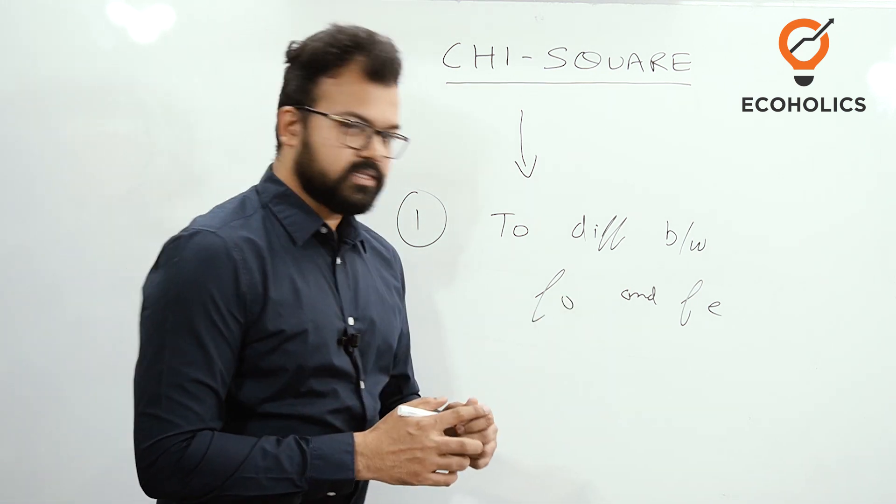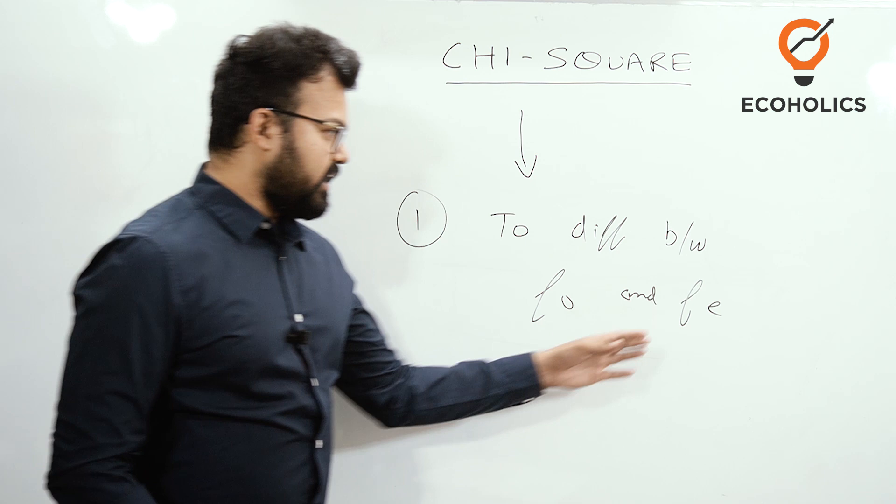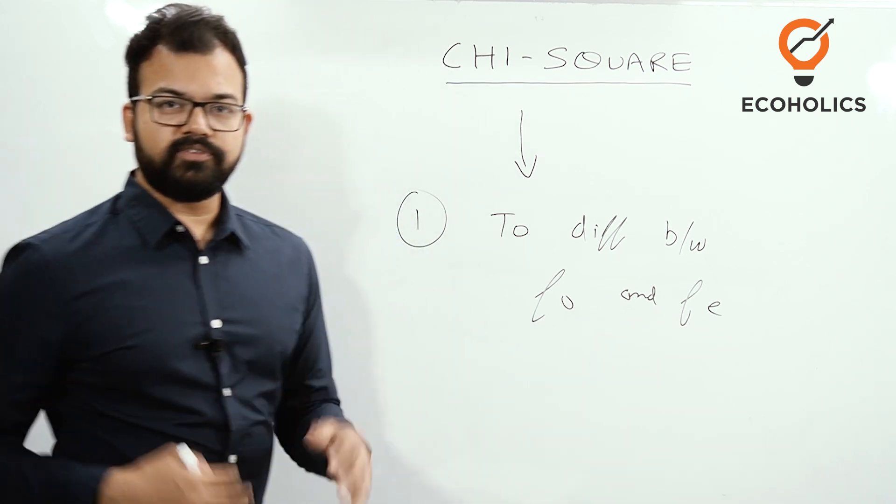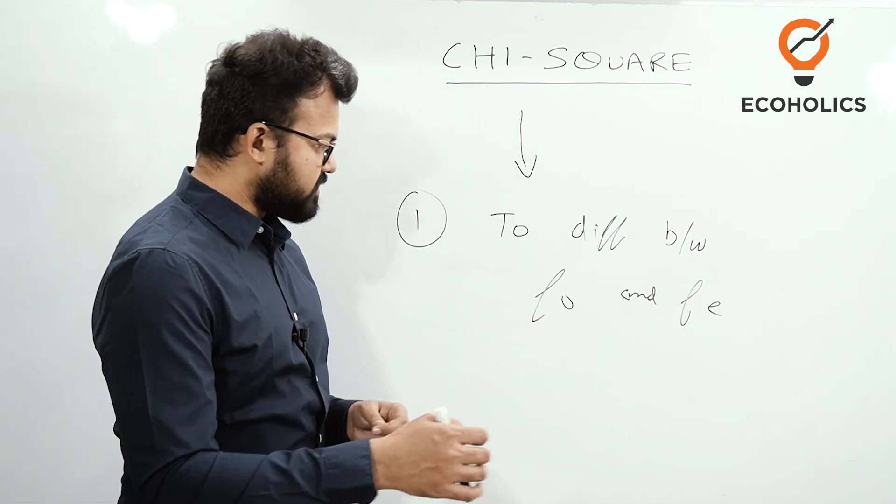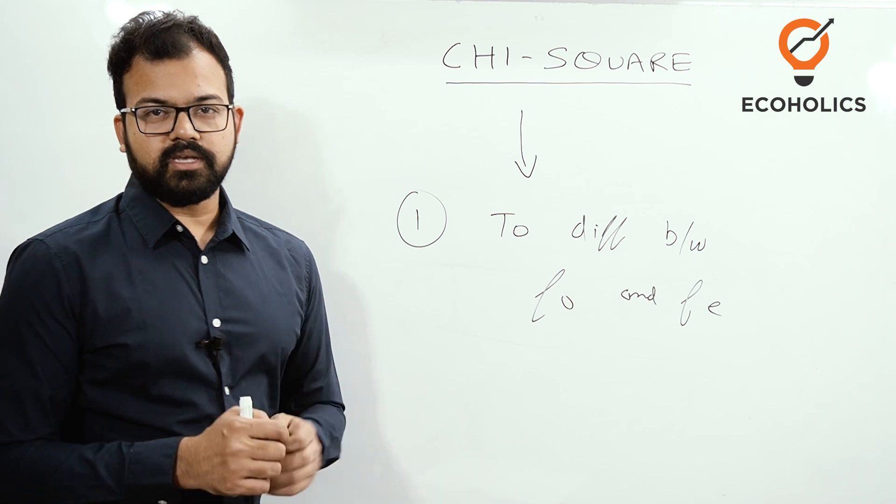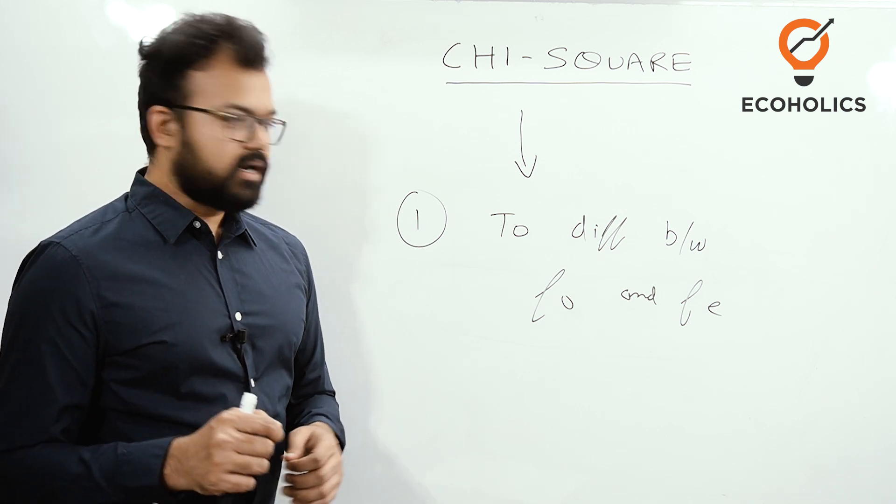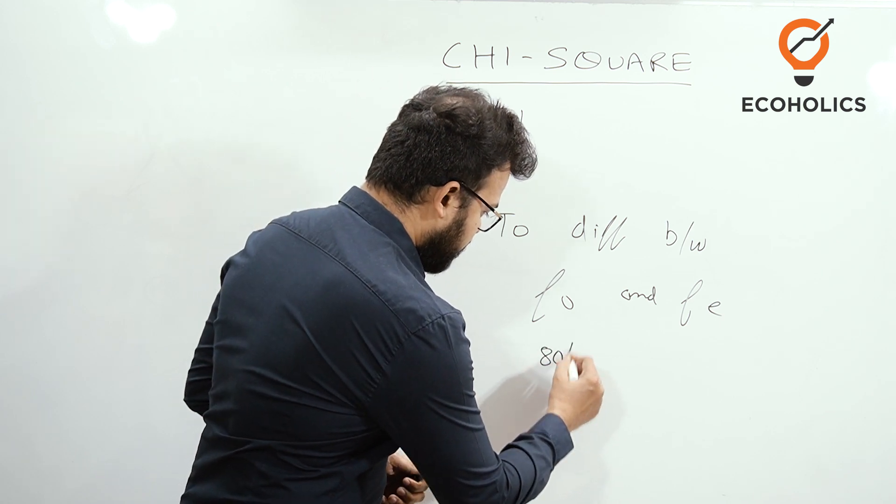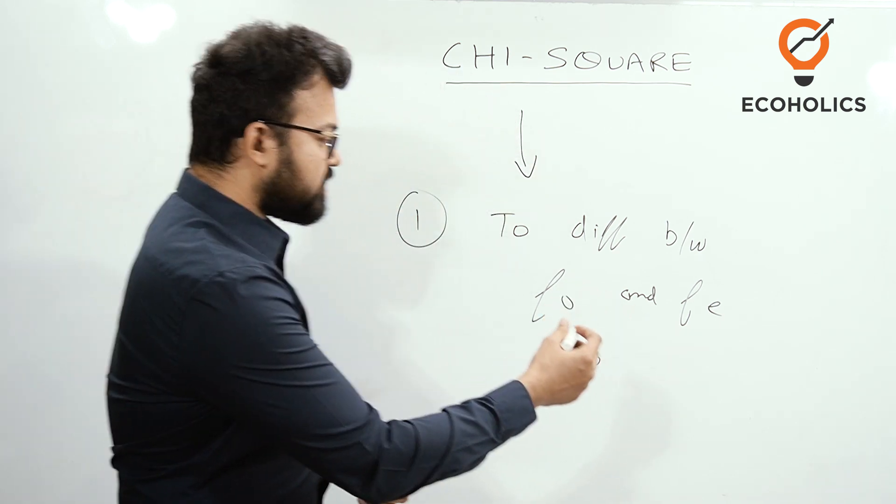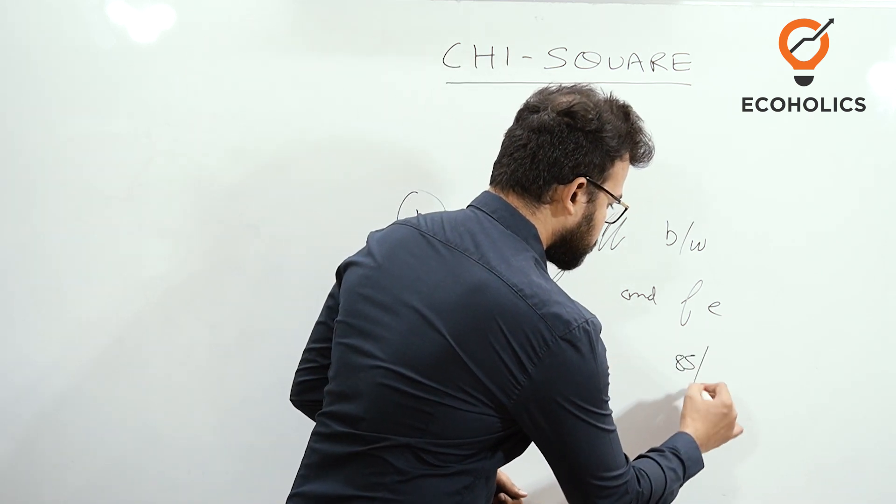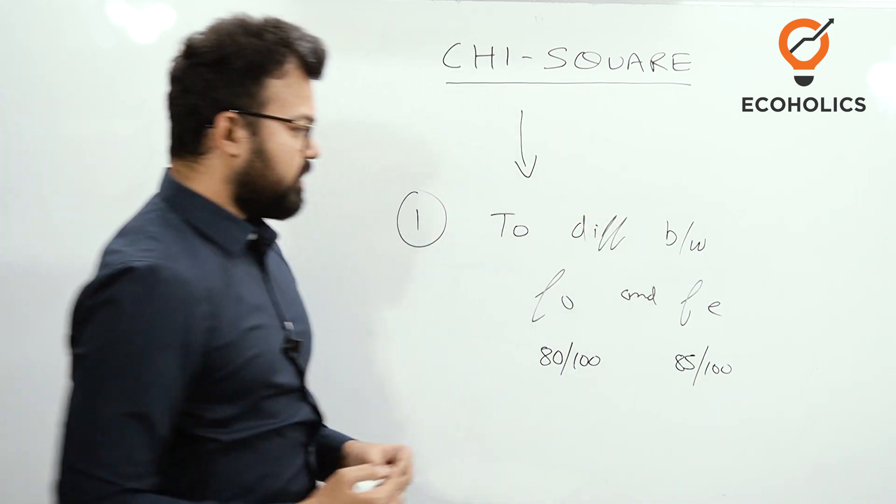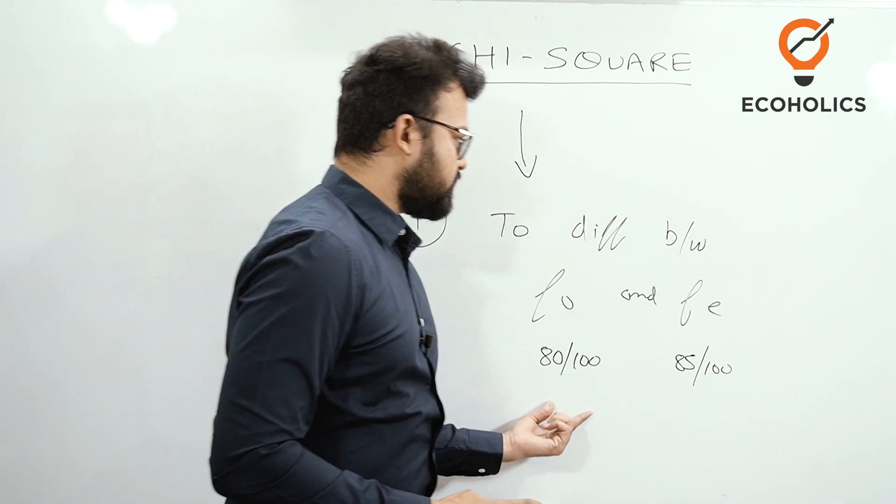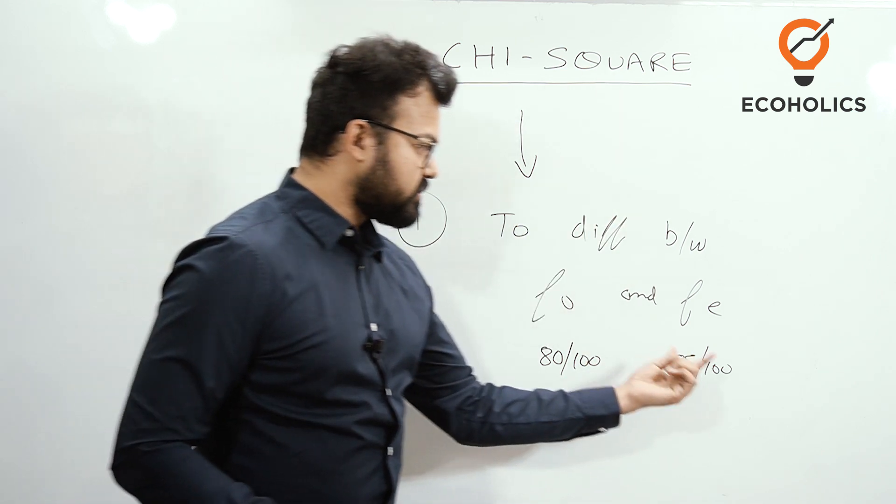Fe is expected frequency. For example, you are giving a semester examination and you have scored 80 marks out of 100, but your expectation was that you would score 85. This means there's a difference. To know this difference, chi-square is very important. This is your expected frequency and this is observed frequency.